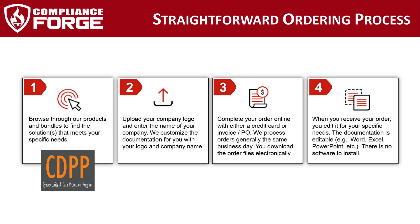The order process is very straightforward. We have a wide range of products as well as discounted bundles to choose from. Once you identify what you would like to order, you include your company name and optional logo during the ordering process. You can check out online with a credit card or invoice option. Once we process the order, you will receive the order files via a secure download link. You can also request a quote online by selecting the 'add to quote' option on the product or bundle page.